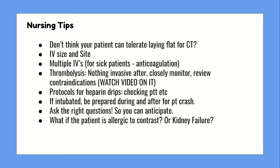If you anticipate your patient going to CT, early on place the IV in the upper forearm or in the AC — ideally an 18 gauge, but CT should also be able to use a 20 gauge. If your patient is super sick, anticipate needing multiple IVs for different things, so have at least two IVs. It's also super helpful having IVs in the forearm where you don't have to worry about the patient bending their arm.